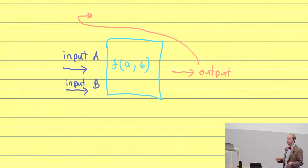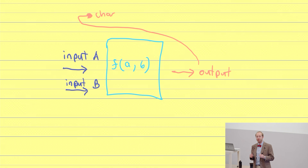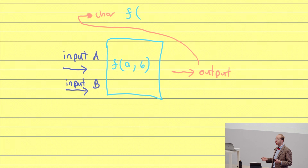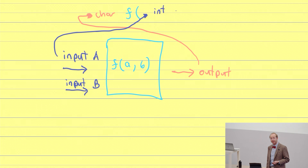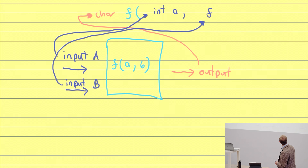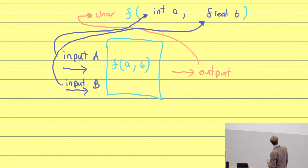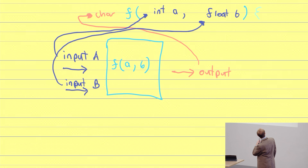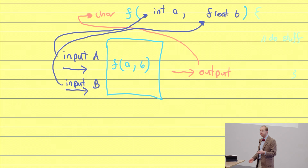In C, the way we specify a function is as follows. First you specify the return type of the function — what type it's going to give back. Then the name of the function, in this case our function is F. Then you specify the parameters the function takes: input A, which is an integer, and input B, which is a float type. Then you close off your brackets and use curly braces, and inside the curly braces is the body of the function — all of the instructions.